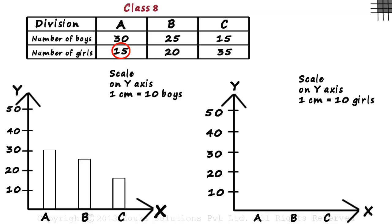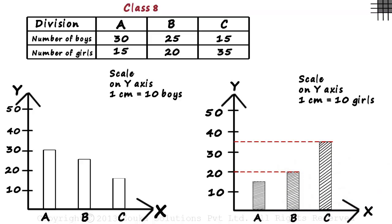To represent 15 girls, we draw a shaded bar of 1.5 centimeters for Division A. And similarly, bars of 2 and 3.5 centimeters for Divisions B and C respectively. 2 centimeters represents 20 girls and 3.5 centimeters represents 35 girls.